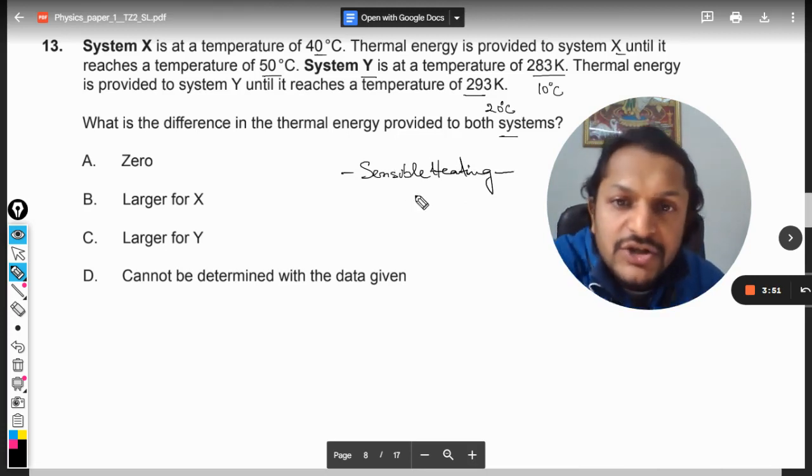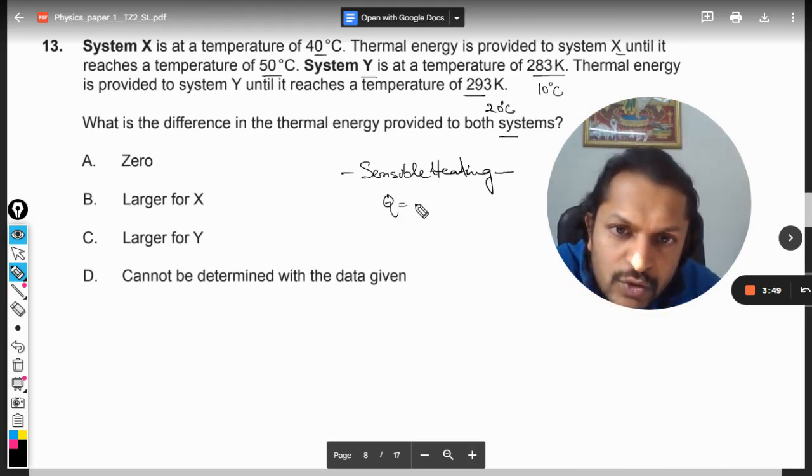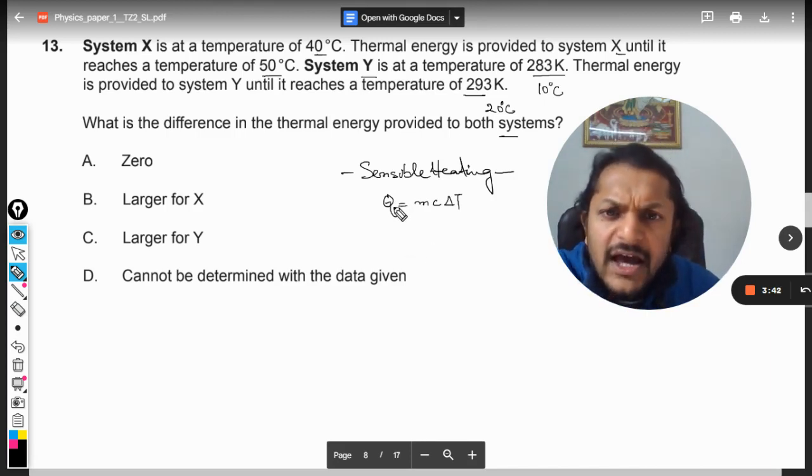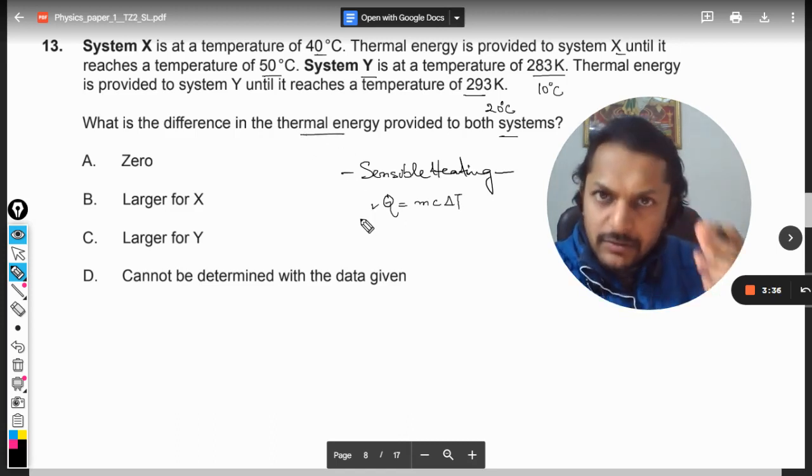This is the formula that we use for sensible heating, and the question is asking for which system the heat that was provided has to be more. Well, reading the question again, you see M is not given to us.